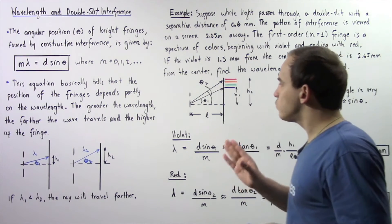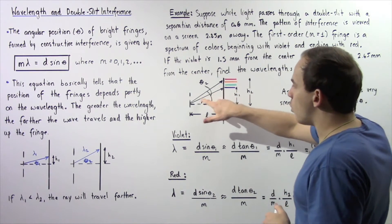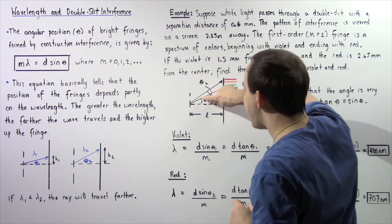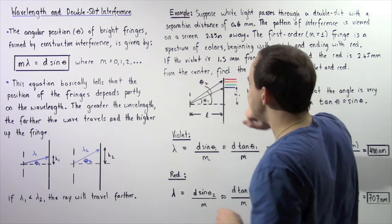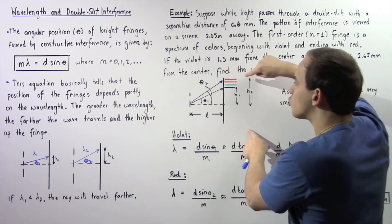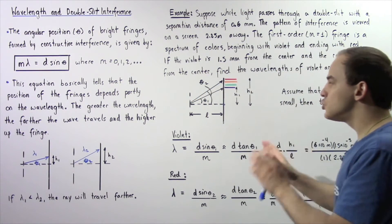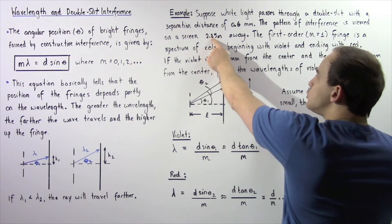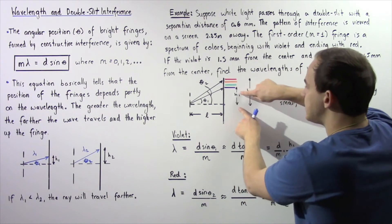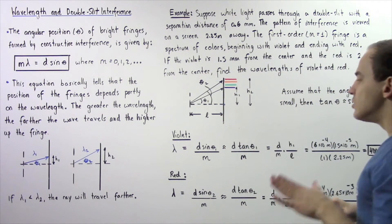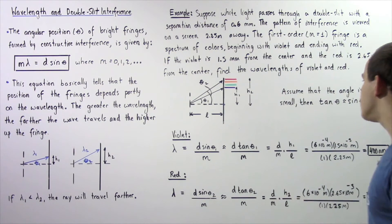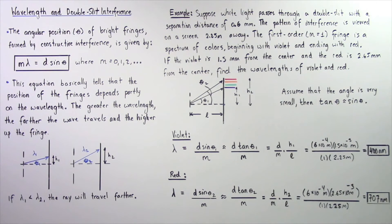Let's suppose we have two rays of light. Ray number 1 is responsible for forming the violet fringe, and this angle is theta 1. The angular position of the second ray that forms the red color is given by theta 2. We essentially have two right triangles where the base of each triangle is given by L, which is 2.25 meters. The height of the smaller triangle is h1 and the height of the larger triangle is h2. We begin by assuming that these two angles are very small, which allows us to make the assumption that tangent of theta is approximately equal to sine of theta.